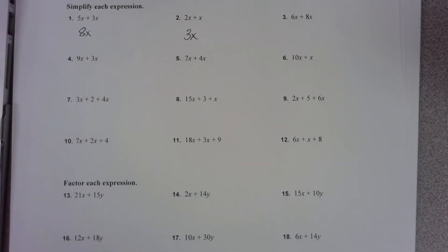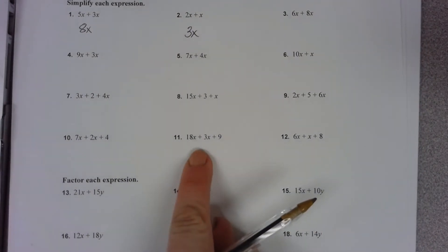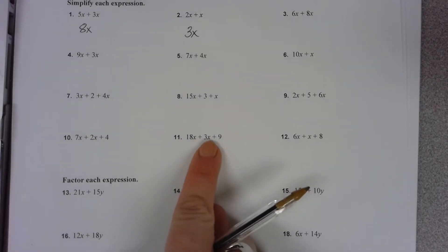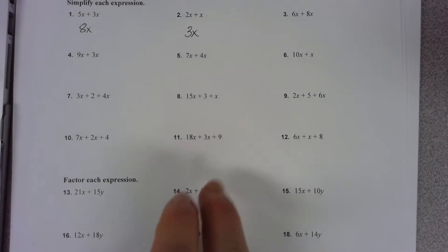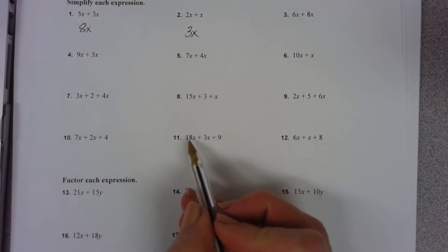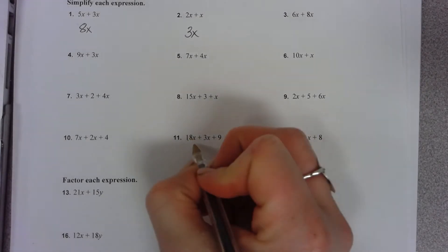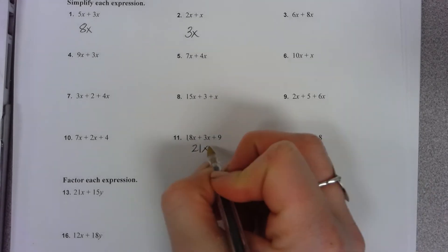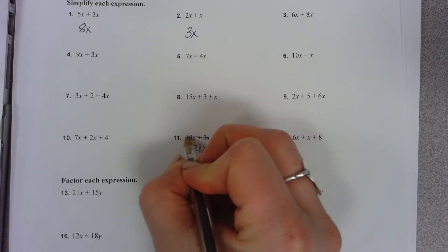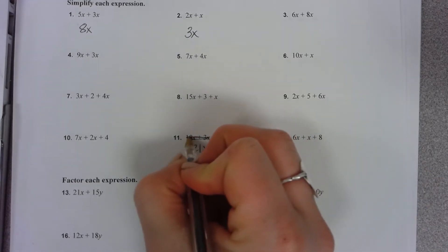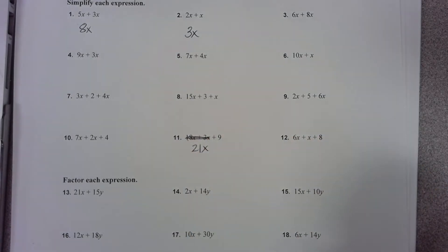I'm going to move down to problem number 11 with you here. So we have 18x and 3x and 9. 18x and 3x are both combinable. We can combine those. So we would add the two numbers out front. 18 plus 3 is 21. Bring down our x. And then that means that we've kind of combined or covered that part of the problem.